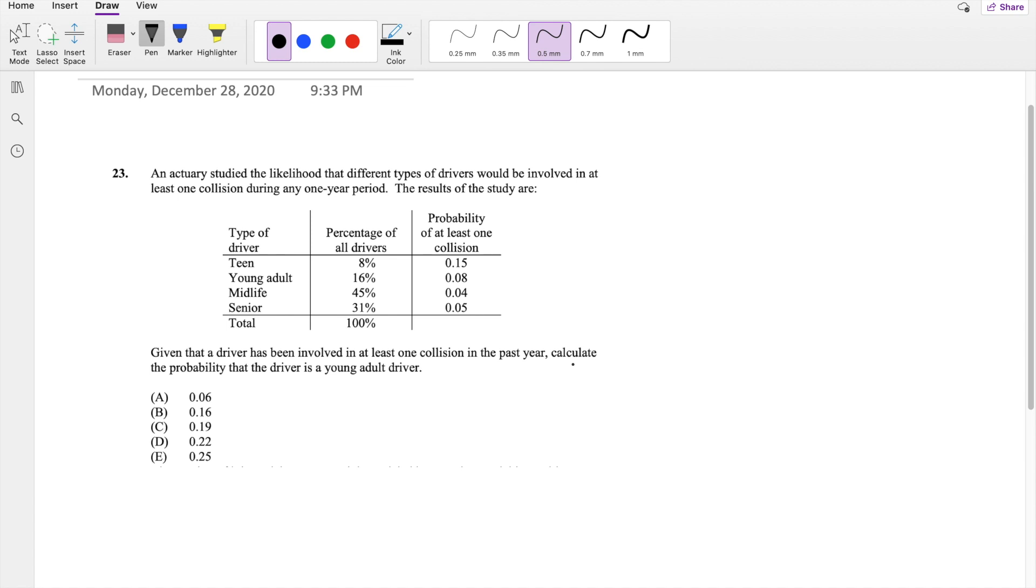Okay, once you've attempted it, let's dive right in. So the question is, given that a driver is involved in at least one accident in the past year, calculate the probability that the driver was a young adult driver, given that they had at least one collision.